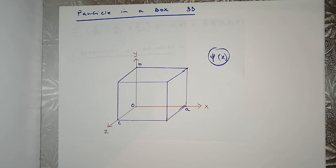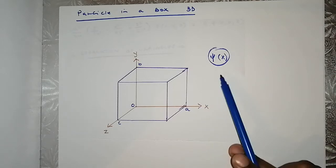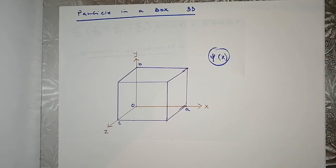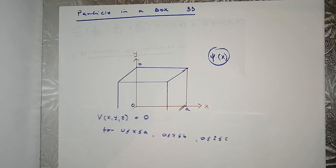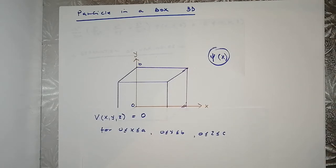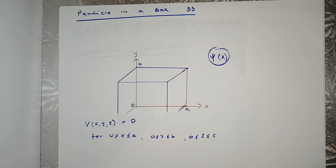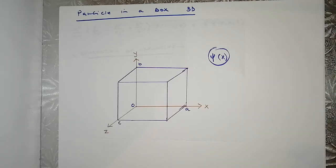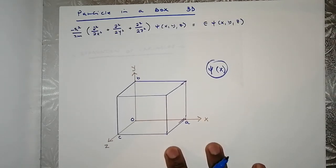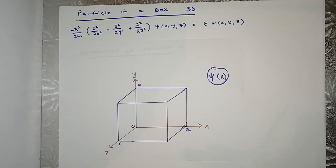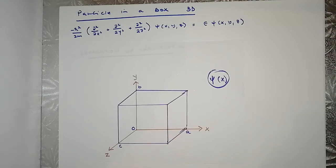In the previous video, we actually tackled a particle in a box in a one-dimensional space where we were able to find the wave function and the corresponding energies. In this video, we're actually taking a three-dimensional space. The potential energy will equal zero, and these are the boundaries that correspond to that potential energy. The Schrödinger equation will take another form, obviously with the potential energy equal to zero.